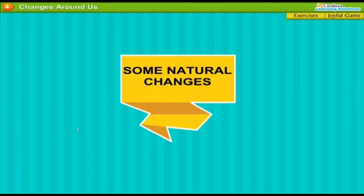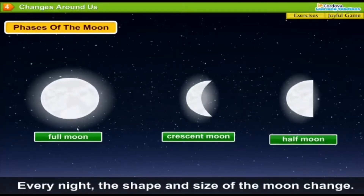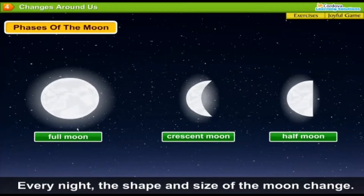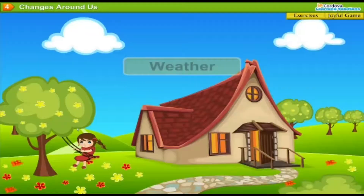Some natural changes: Phases of the moon — full moon, crescent moon, half moon. Every night, the shape and size of the moon change. The different shapes of the moon are called phases of the moon.